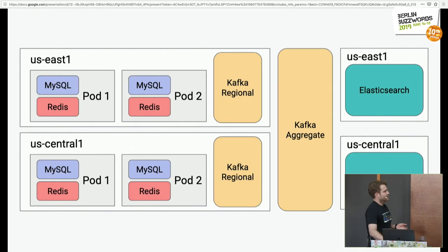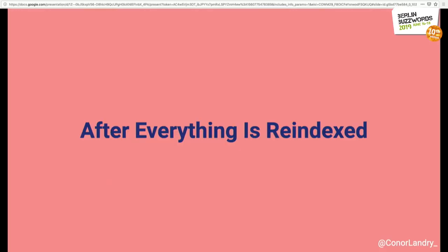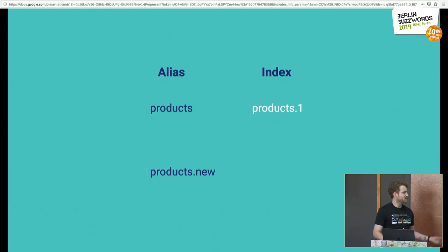Bringing it all together: we can see the US East region, US Central region, Elasticsearch regions, regional Kafka in each region, the Kafka aggregate, and the flow from each sharded pod to the regional Kafka and Elasticsearch. After everything is re-indexed and we've verified everything completed successfully, we need to put the new index into production. It's pretty simple — we just change the alias name so the products index is now products.one. We don't do any cache warming, which means there's a small latency spike for merchants whenever we switch, but since our query rate is high enough it goes down pretty quickly.